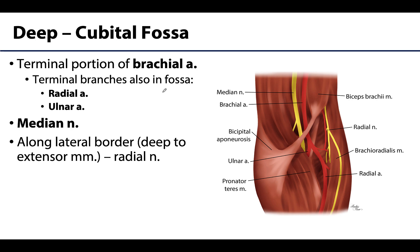Now let's discuss the deep structures of the cubital fossa, where we find some of the largest neurovasculature in the upper limb. While the neurovascular structures are the stars of the show, there is also a notable amount of adipose tissue protecting this region and filling the empty spaces.